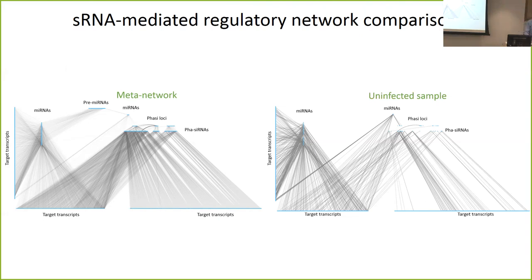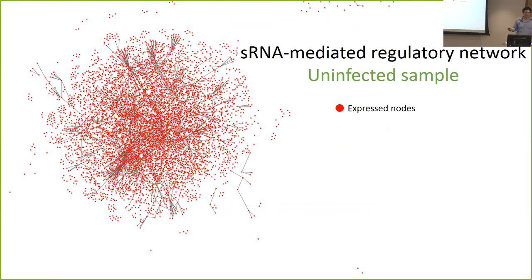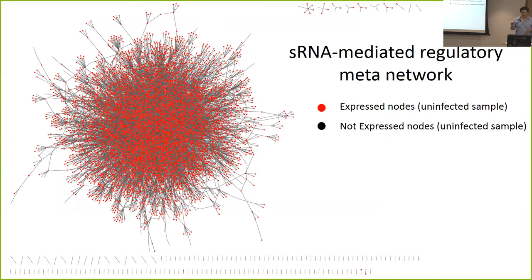An audience member clarifies: I'm just thinking about when you built the reference network. Jose responds: The reference network is just a map of interactions. They don't necessarily all exist in any given plant — some of these nodes may never occur together. This shows the overall regulatory potential. When we look at expression, then we see which ones are active and which are not. When we started, we were planning to do a network per treatment, and we realized the results are not comparable — we need a model network. Because if a phasiRNA locus is on but has very low expression, you may not detect it at all. Our aim was to get all the interactions mapped and then input expression data.